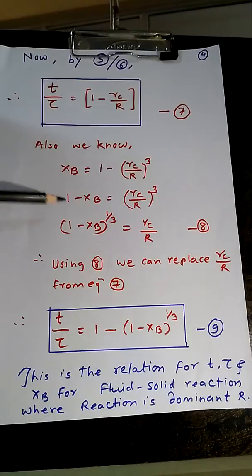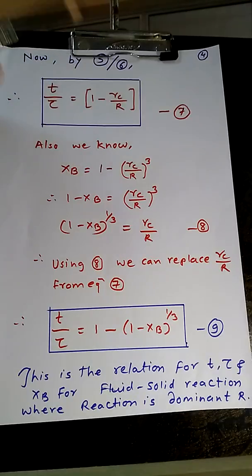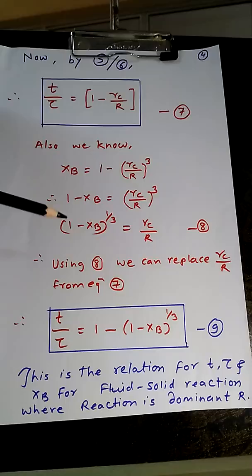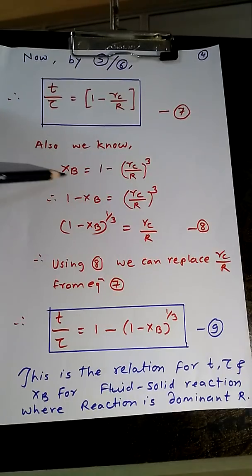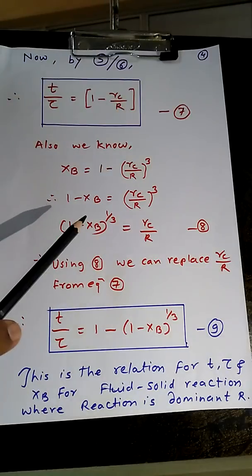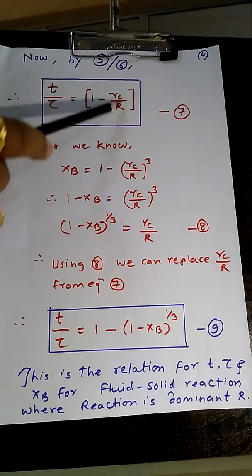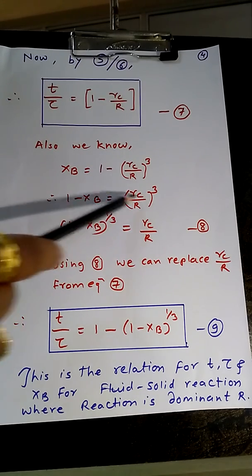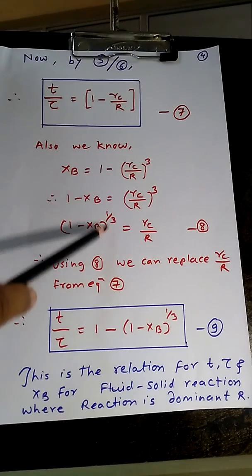Now we already know from our previous video that 1 - XB, that is the fraction of B unreacted, is nothing but volume of the core divided by total volume of the solid. And from this you get XB = 1 - (Rc/R)³. So it gives 1 - XB = (Rc/R)³. That will be very much useful. And for this expression you require Rc/R so we can take out the cube root on both sides, so it will be Rc/R = (1 - XB)^(1/3).